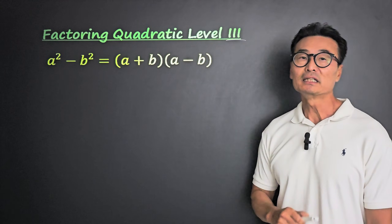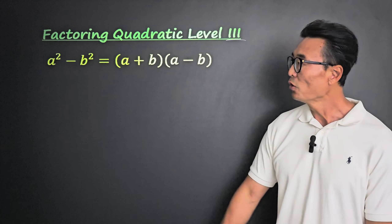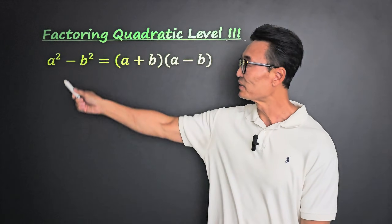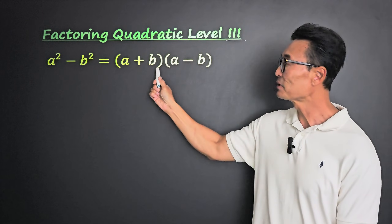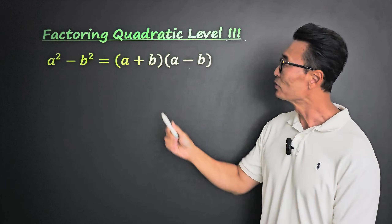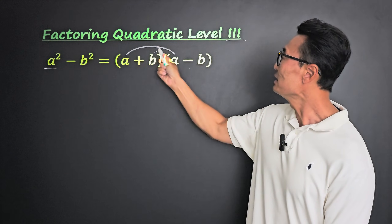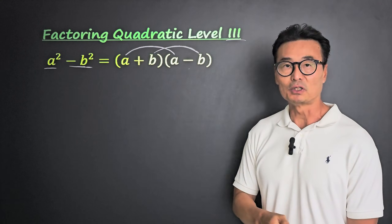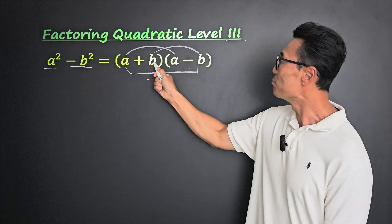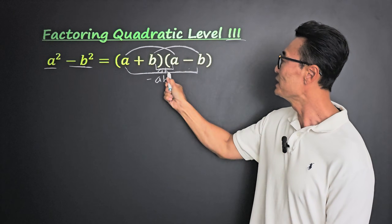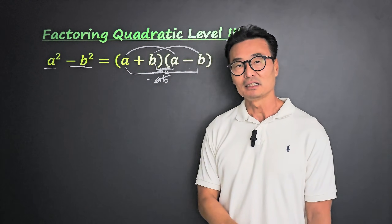For level 3, I'd like to talk about what's called the difference of squares. When you're given a squared minus b squared with nothing in between, it will always equal a plus b times a minus b. The reason is: a times a gives us a squared, b times negative b gives us negative b squared, and the cross terms a times negative b and b times a cancel each other out, leaving nothing in between.